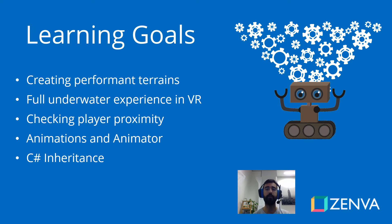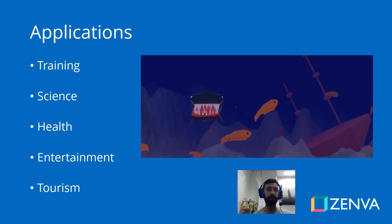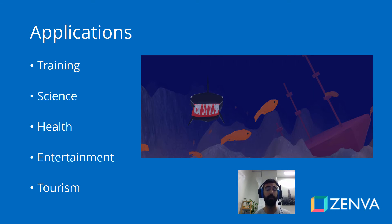At the end of the course we'll have a discussion on performance and talk about something called GPU instancing. All the skills that you learn in this course are transferable to many other areas, and there are endless applications of things you can build — from the locomotion aspect like how we are swimming in VR, and everything else that we'll be covering.